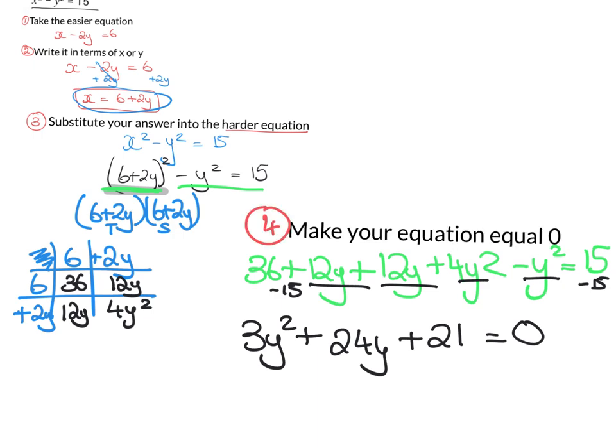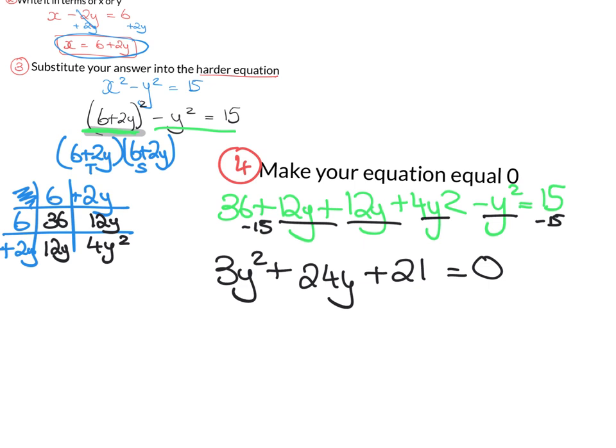So this is a quadratic, but generally we can make them a little bit easier by dividing across by something. So I can see here that everything, all of these 3, 24 and 21 is a multiple of 3. So I'm going to divide everything by 3. Because remember in maths, once you do it to everything, it's totally fine. So if I divide this by 3, I'm going to get y squared plus 8, or 24 divided by 3, plus 7.